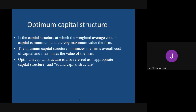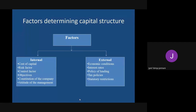Now, what are the factors that help you determine whether to have debt or equity? This is a very common question in every type of exam - CA, CS, MBA, and other commerce-related exams. The factors affecting capital structure decision are divided into two parts: internal and external. The first internal factor is the cost of capital - find the cost of debt and the cost of equity, and choose whichever is cheaper.